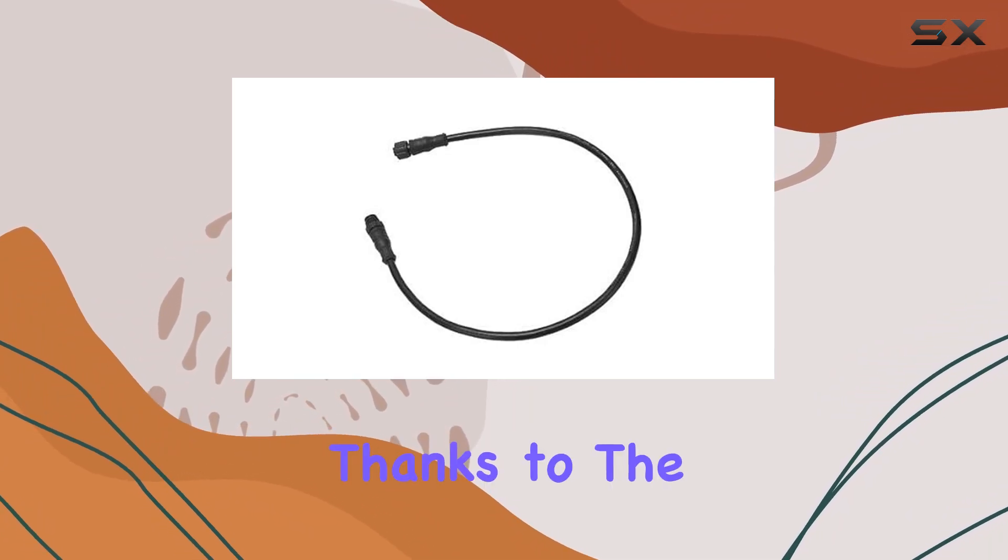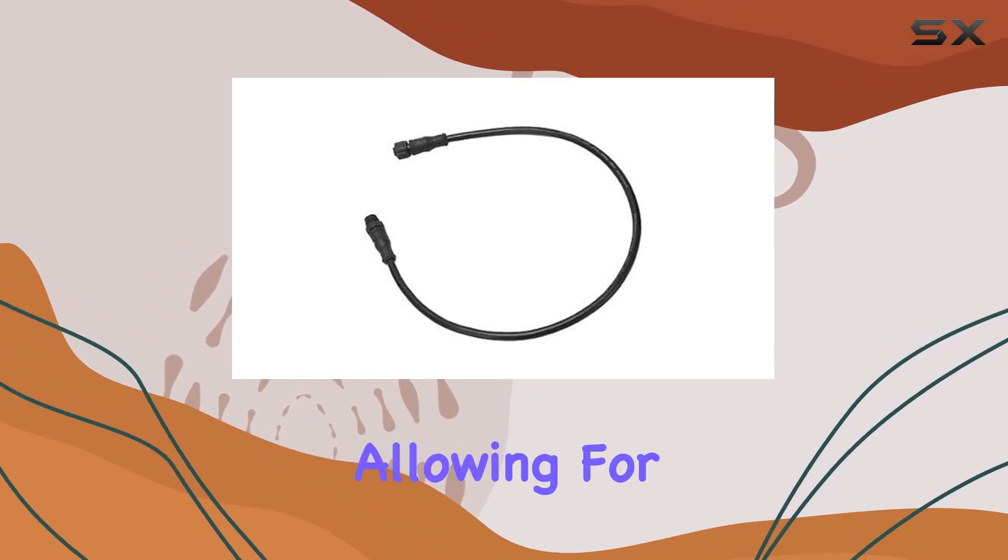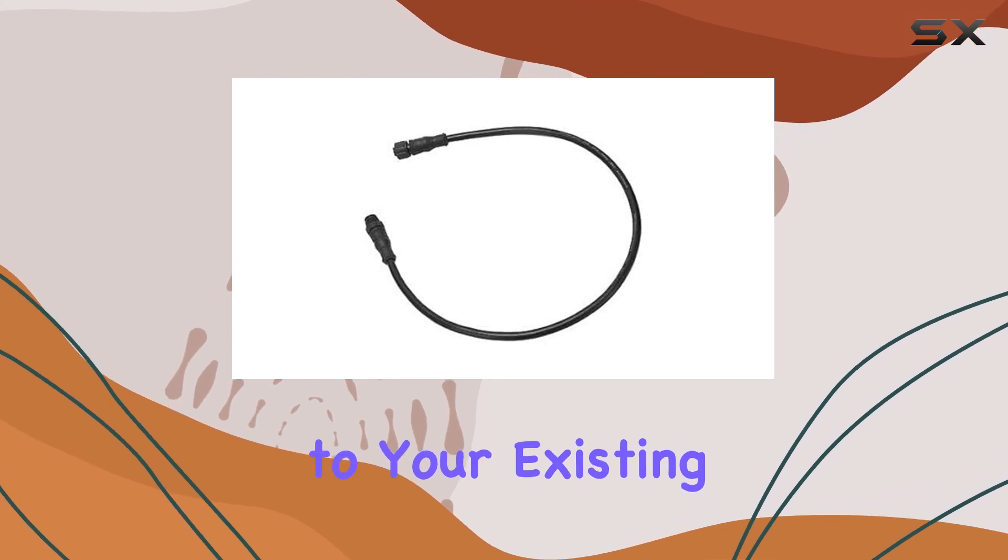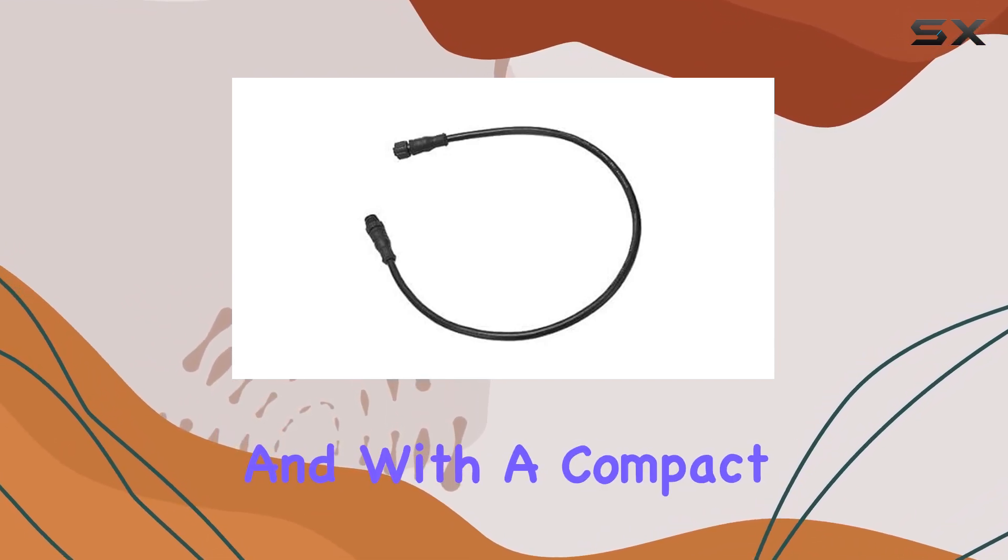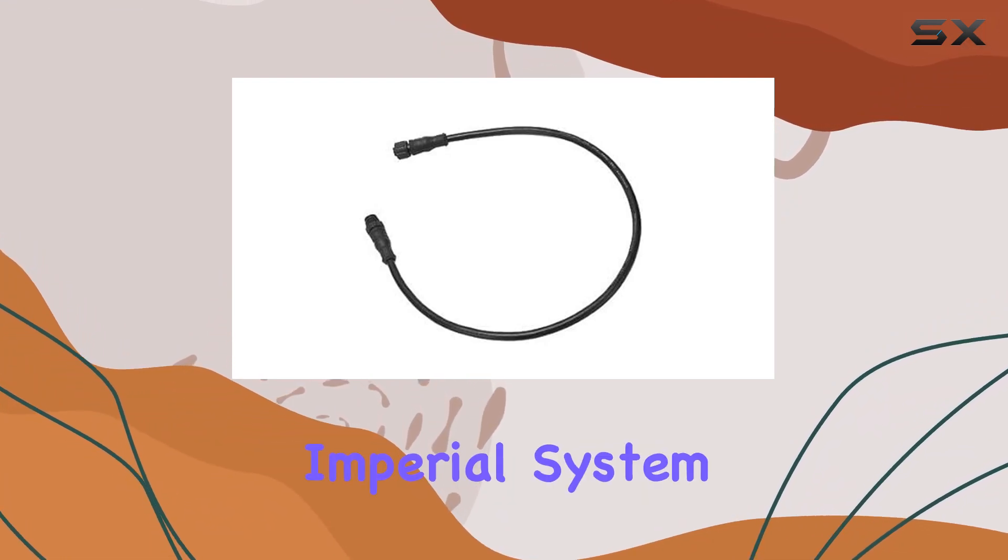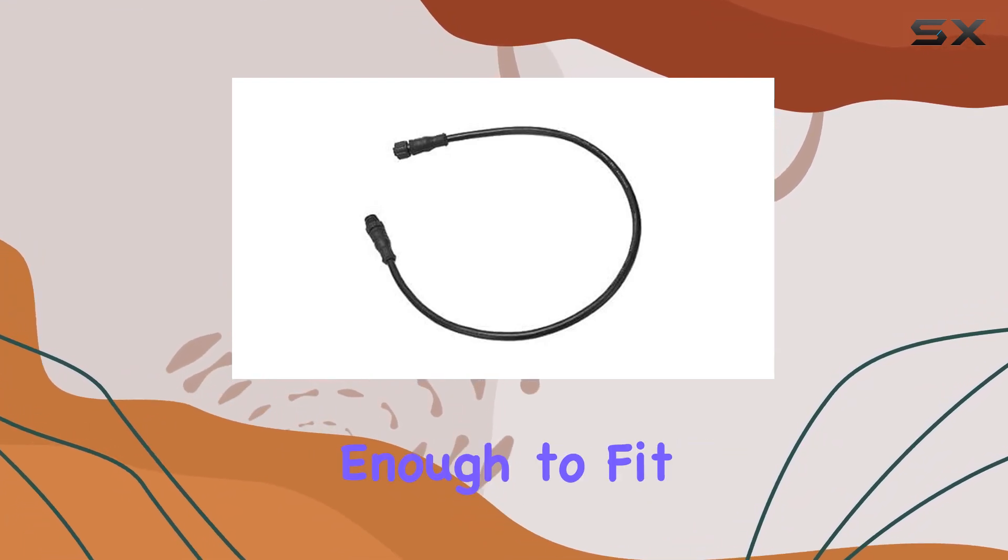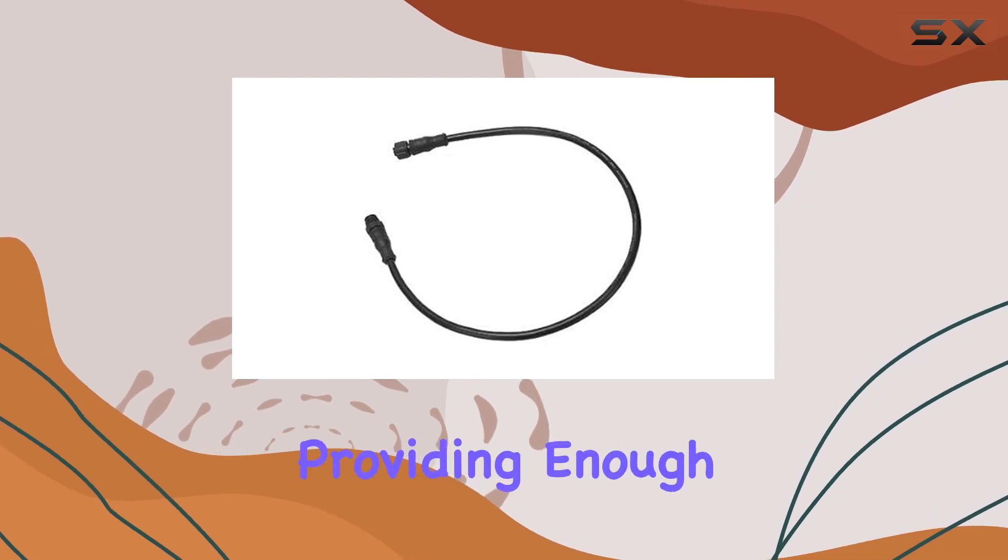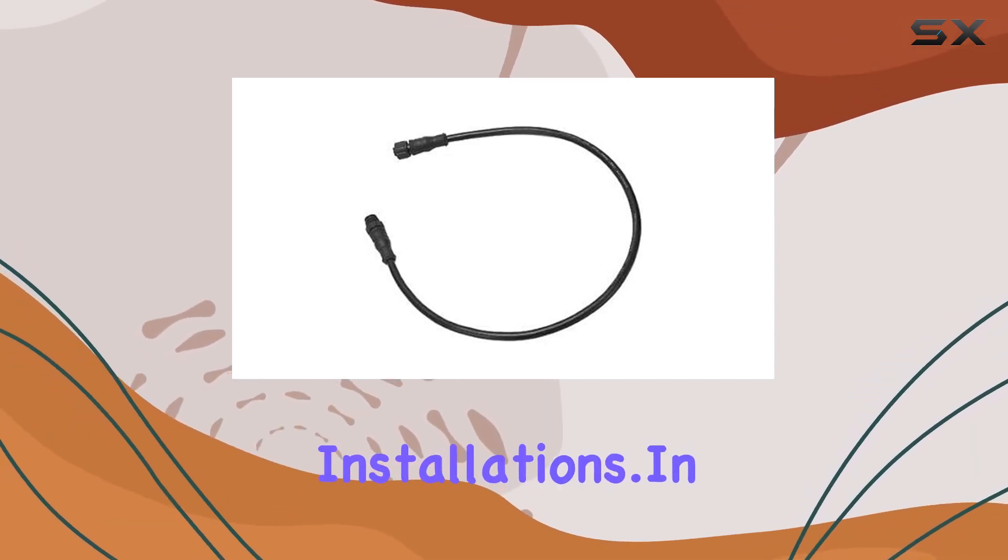Installation is a breeze thanks to the male-to-female connector design, allowing for easy connection to your existing backbone network. And with a compact 1-meter length, that's about 3 feet 3 inches for my fellow imperial system users, it's versatile enough to fit into tight spaces while still providing enough reach for most installations.